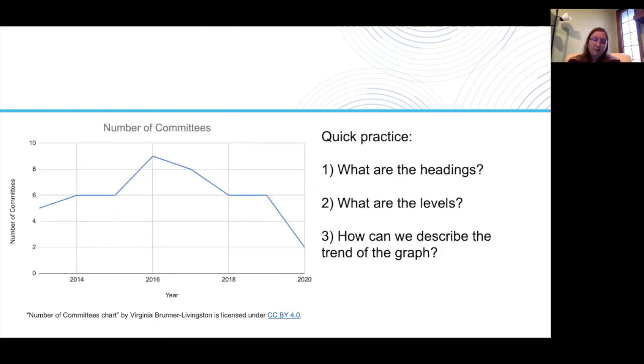Let's take a look at this chart again here, the number of committees chart. As we described earlier, from 2013 to 2016, there was an increase in the number of committees. Then the number of committees started decreasing from 2016 to 2019. But then something happened between 2019 and 2020 to cause the number of committees to decrease drastically.